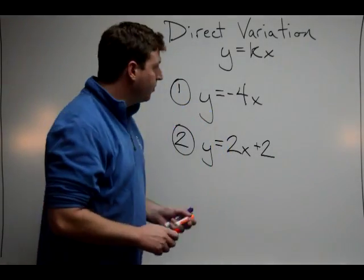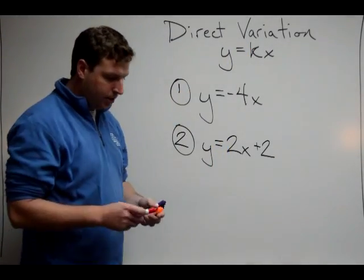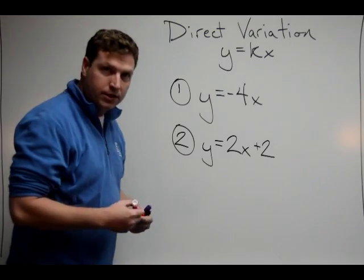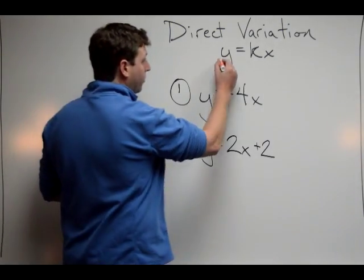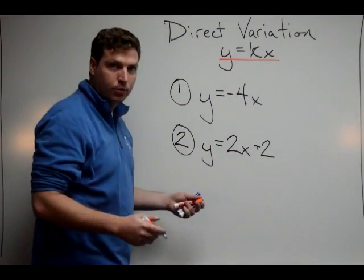All right, these next couple examples are direct variation, and we know that direct variation, the standard form, the easiest way to identify it is y equals kx.